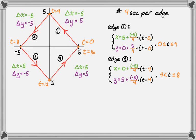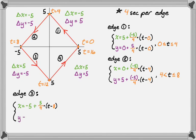For edge three, our initial x is negative five, and the change in x is positive five over four, so x equals −5 + (5/4)(t − 8). We hit this edge at t equals eight, so we offset the time by eight. y starts at zero, delta y is negative five, so y equals 0 + (−5/4)(t − 8). The time interval is 8 < t ≤ 12.